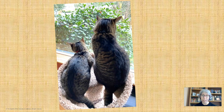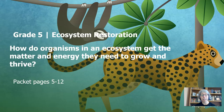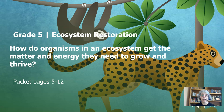The more we study our ecosystem, the more questions we have. And the more questions we have, the more we learn about it. Let's continue. This unit is called Ecosystems Restoration, and we're building up our knowledge about this unit in order to help us answer the question: how do organisms in an ecosystem get the matter and energy they need to grow and thrive?